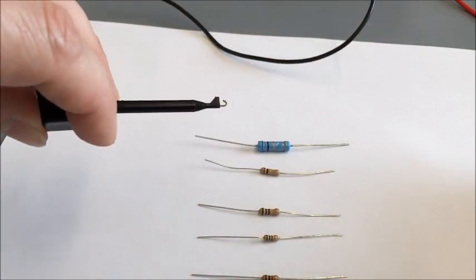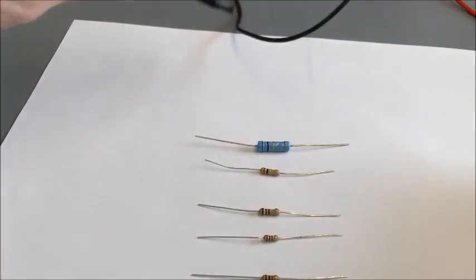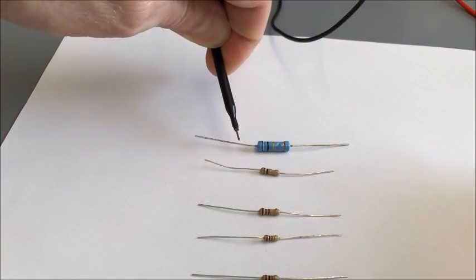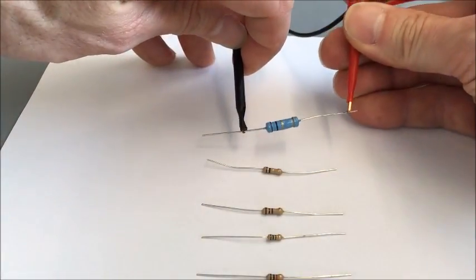We use the little hooks right here. If we push down on the barrel, the hook comes out. We grab one of the leads of the resistor with the hook and then grab the other lead with the other hook.